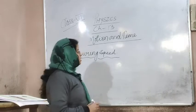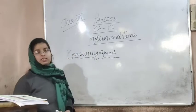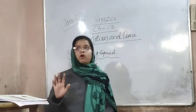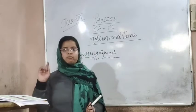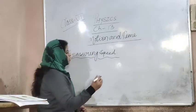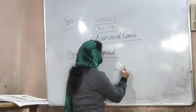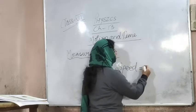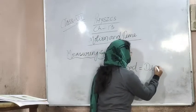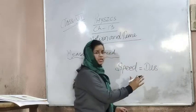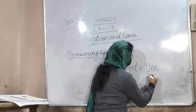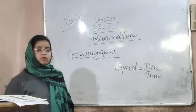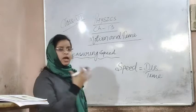Today in class we will discuss measuring speed — how it is measured and by which units. Recalling what I discussed in our previous class, I discussed about speed and the formula of speed. Speed is equal to distance divided by time, and based on distance divided by time, we can measure speed in certain units.